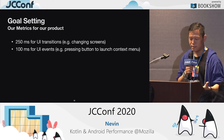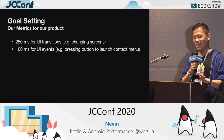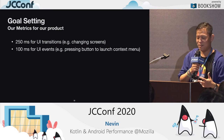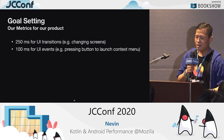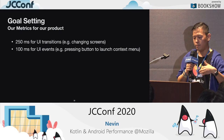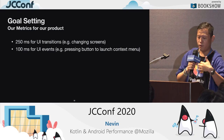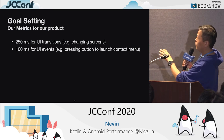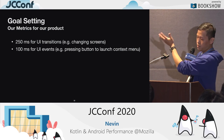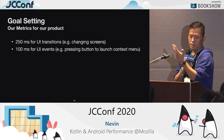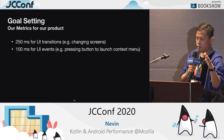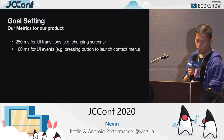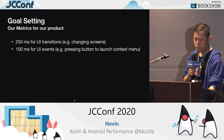How fast is fast enough? 60 milliseconds is a common rule, but sometimes it's very hard. The UX team found for our product: 250 milliseconds for UI transitions, for example fragment transactions; and 100 milliseconds for UI events like pressing a button and seeing a response.